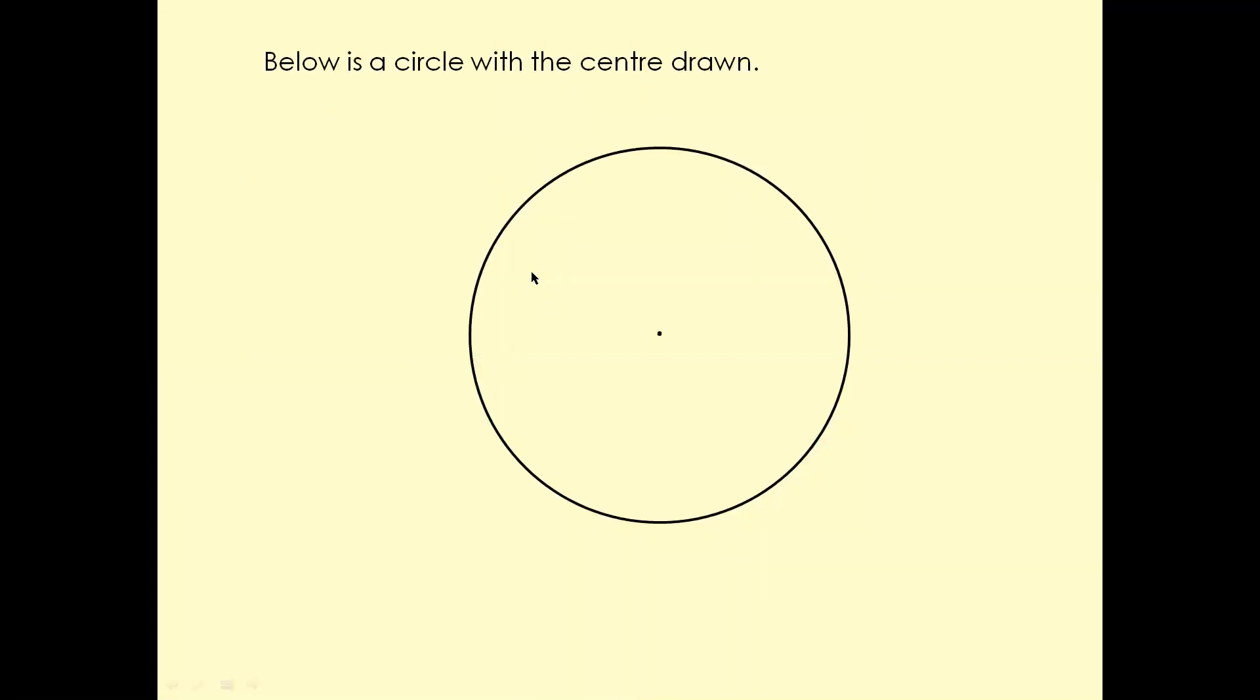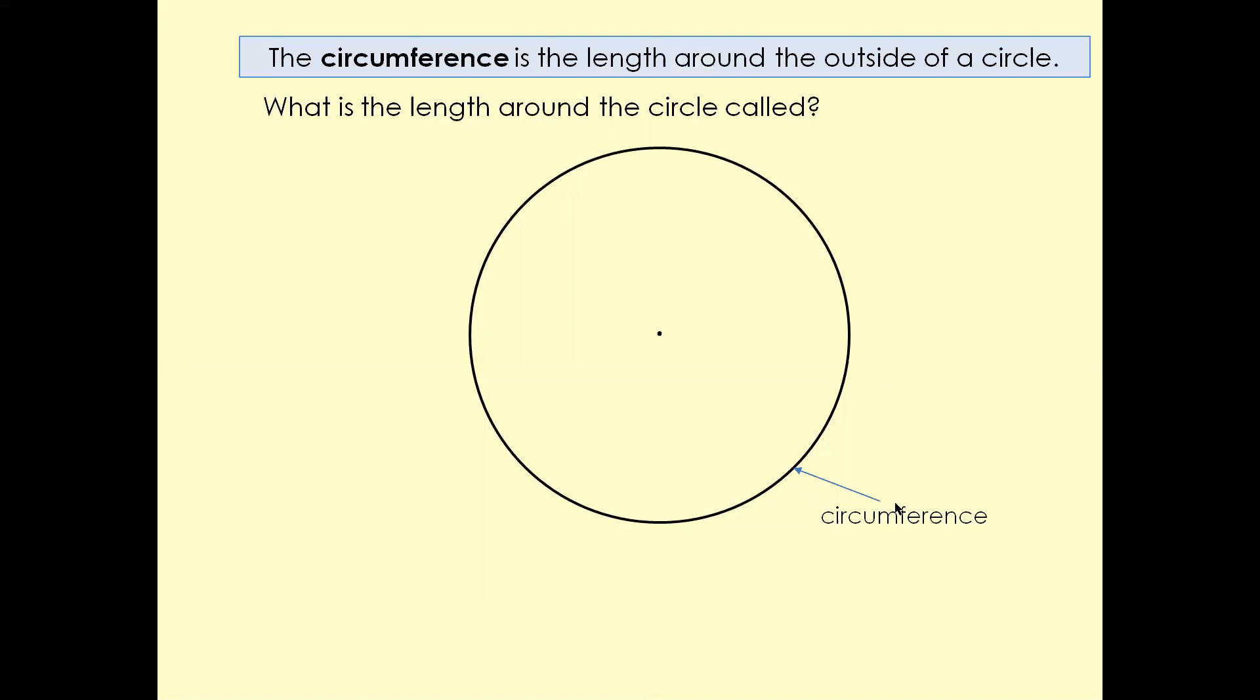Below is a circle with a center drawn here. What is the length around the circle called? The answer is circumference. The circumference is the length around the outside of a circle.